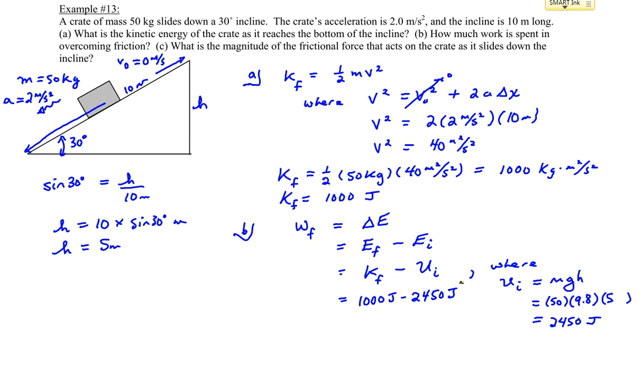So 1,000 joules minus 2,450 joules. Where did that missing energy go to? That went to the work done by friction. So it lost 1,450 joules of energy due to the work done by friction.